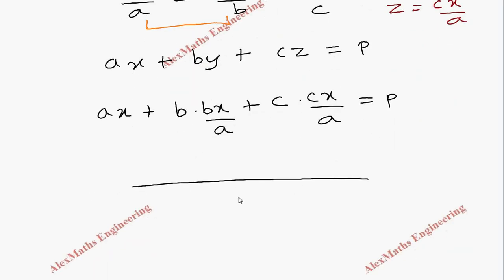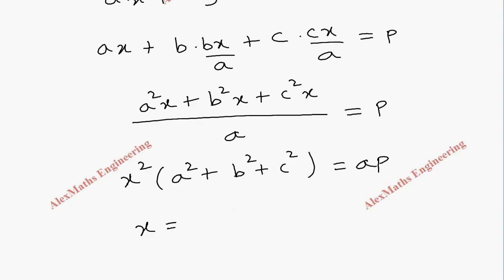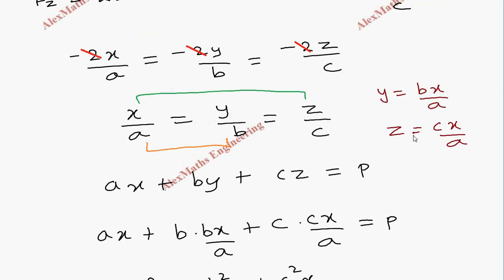Taking LCM as a, this becomes a square x plus b square x plus c square x equal to p. Taking x common, we get x times (a square plus b square plus c square) equals p. Therefore, x equals ap by (a square plus b square plus c square).